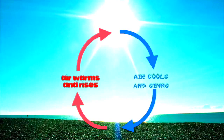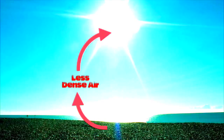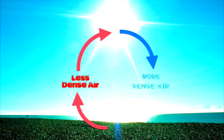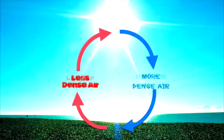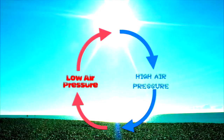Air is rising over warm surfaces and sinking over cool surfaces. If I replace those words with density, we have rising air that's less dense and sinking air that is more dense. And if I replace those words with pressure, now we have low air pressure and high air pressure. The most important thing to remember is that when air is rising, it creates low pressure, and when air is sinking, it creates high pressure.